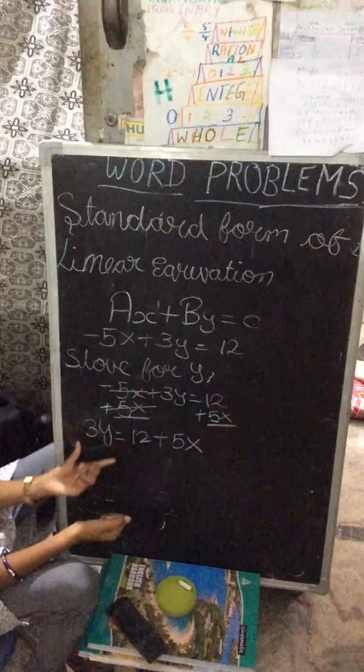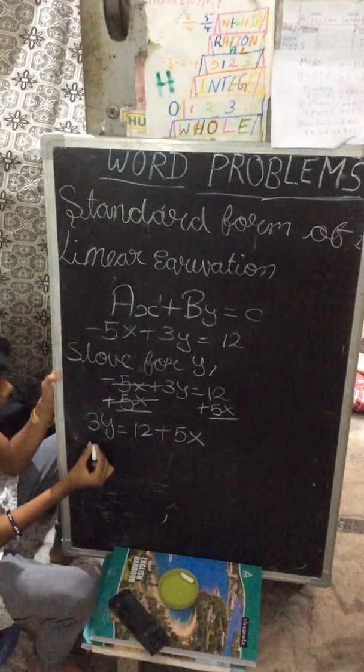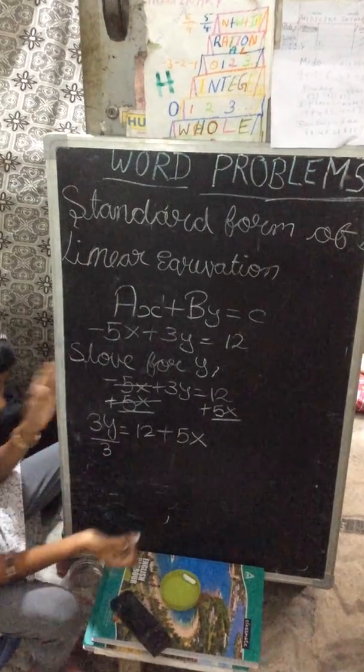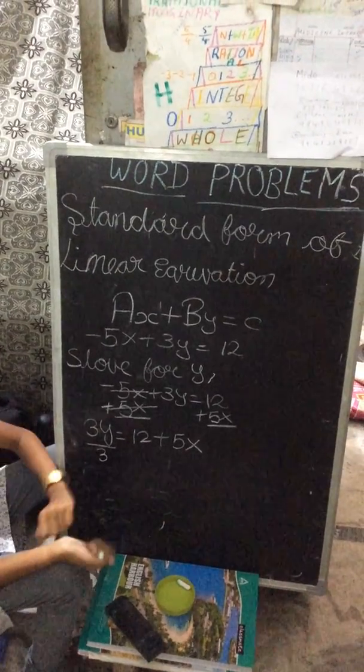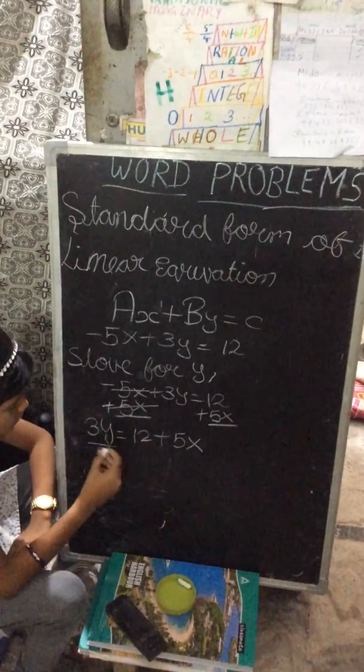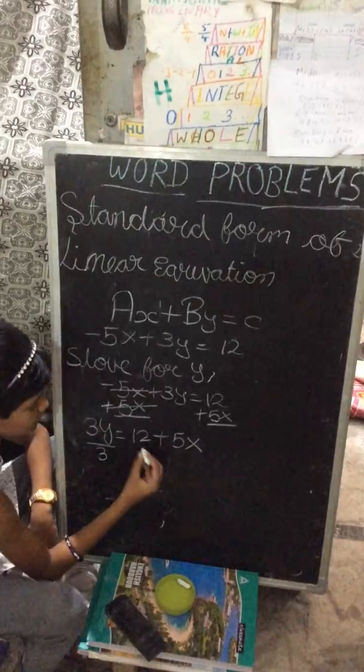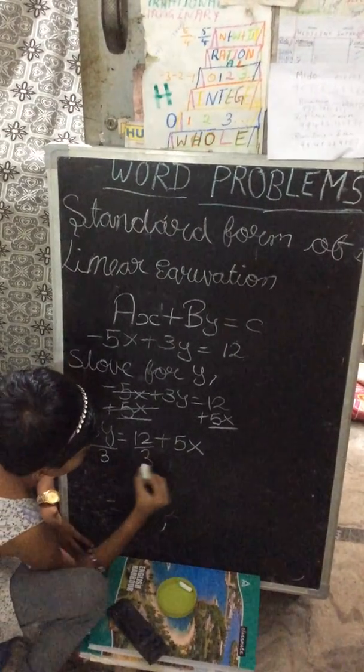Since this is 3y, we have to remove 3, so for that we divide it by 3. Add, subtract, multiply, or divide - do what you want, just do it on both sides. So now, since we did divide by 3 on the left side, we should do the same thing on the right side. Divide by 3.